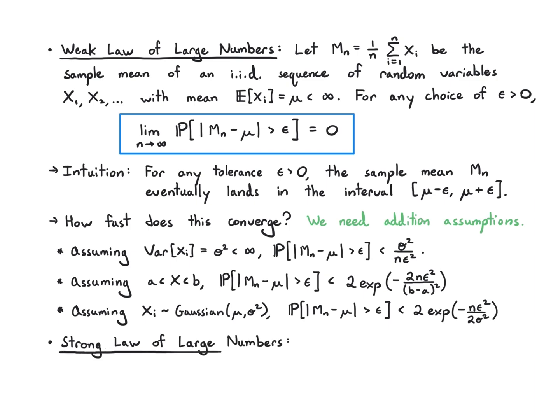And what about going exactly to the true mean? Well, it turns out that's also true. That's the strong law of large numbers. So if you take the limit of the sample mean and ask when it's equal to the true mean, it turns out that as n goes to infinity, it's always equal to the true mean.